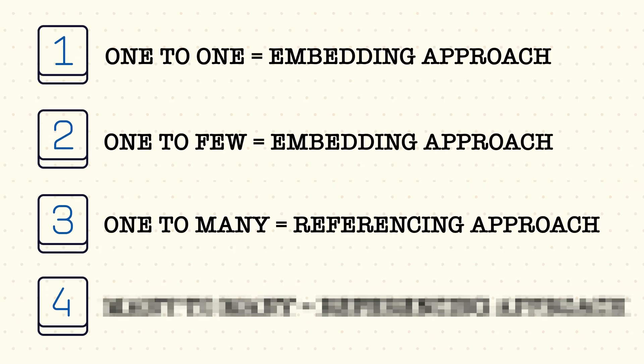For one-to-many relationships, because of the size limit, the preferred approach is referencing. If you have many objects you can't really put them all in an array — you're going to reach the limit faster. If the array is unlimited or can grow indefinitely, using the embedded approach is usually a bad sign because you'll hit the limit at some point no matter how large it is. Referencing works best here because you're just storing a small ID value rather than the whole object.